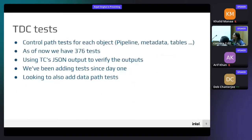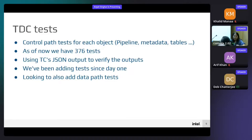As of now we have 376 tests for which we use TC's JSON output to verify, and we've been adding tests continuously. Currently the focus is on the CI part — continuous integration — but the continuous deployment part, like automatically producing release notes and other collaterals, is a work in progress and we hope to be there fairly soon.